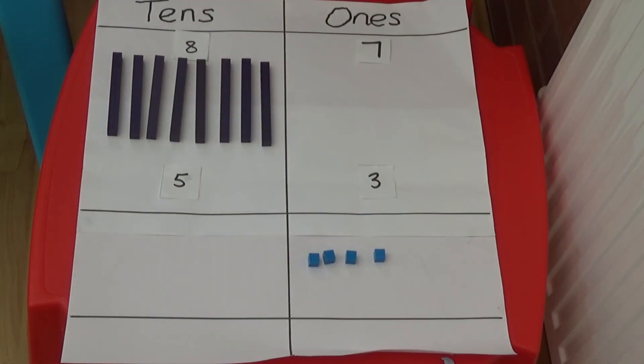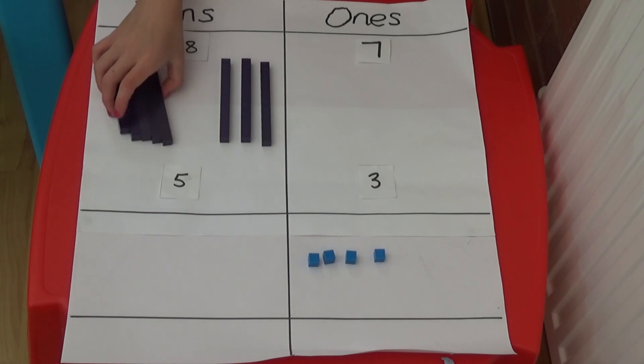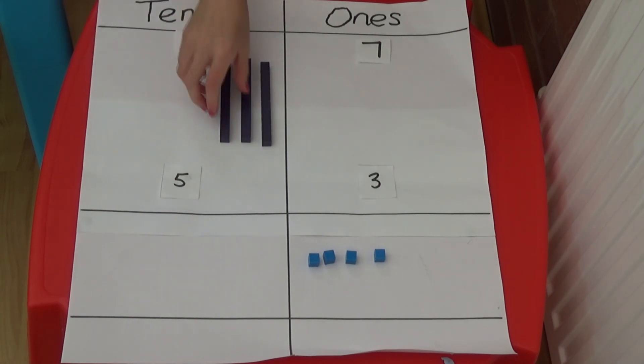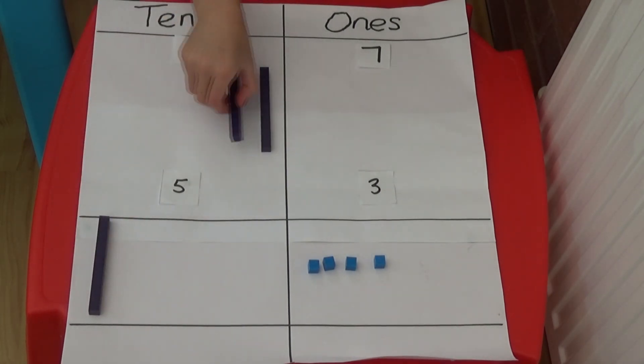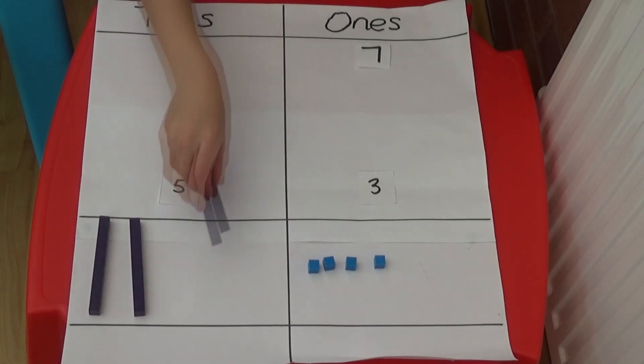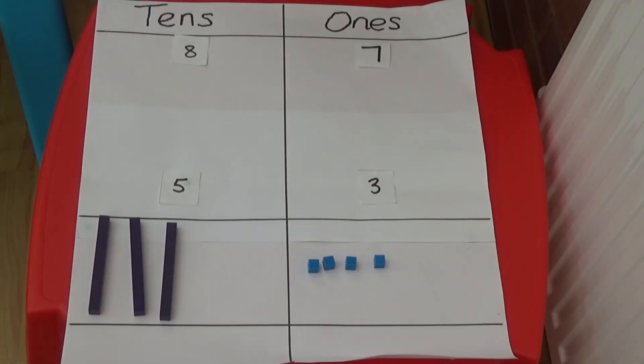Then I'm going to subtract 5 tens from the 8 tens and bring the remaining tens down to the answer box. So 87 minus 53 is 3 tens and 4 ones which is 34.